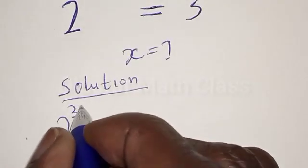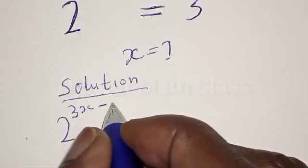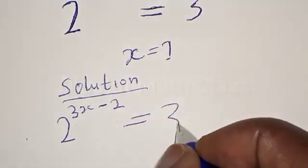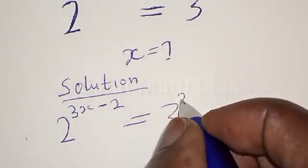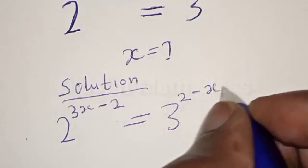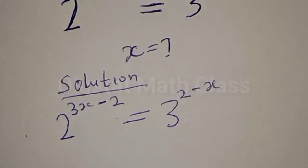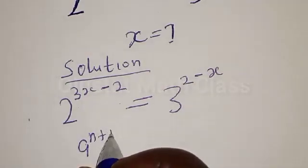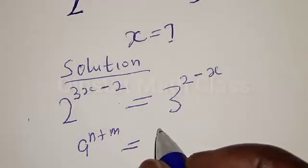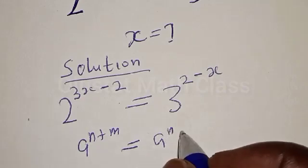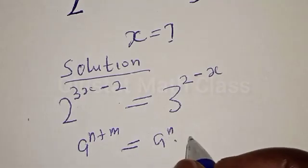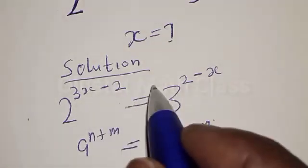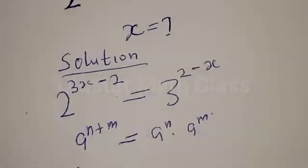Solution. We have 2 raised to power 3x minus 2 is equal to 3 raised to power 2 minus x. Remember, if you have a raised to power n plus m, it is the same thing as a raised to power n multiplied by a raised to power m. We are going to apply this method to our exponential equation.